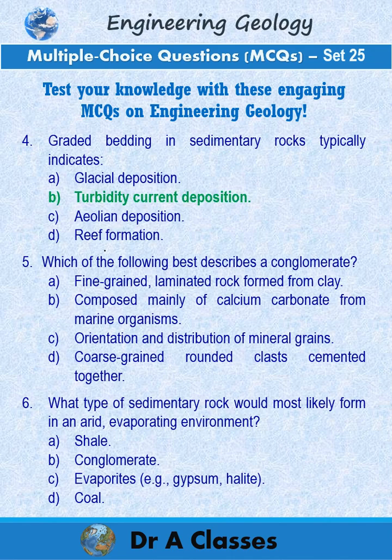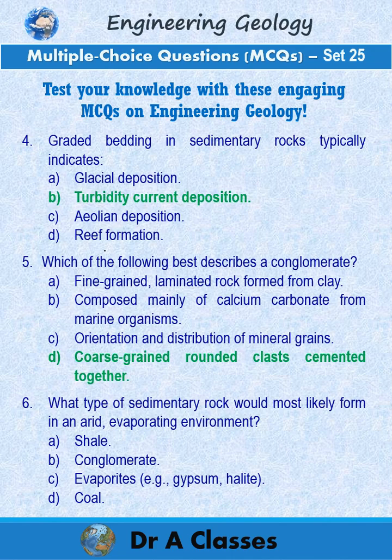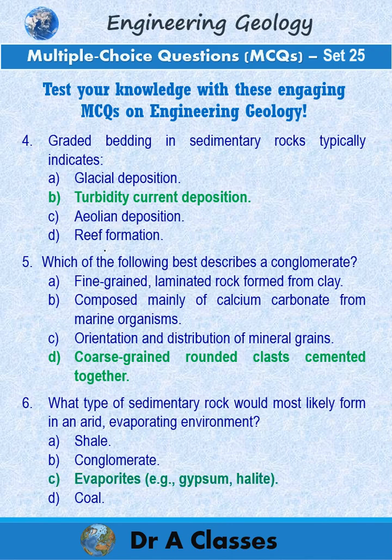Answer to question 4 is B. Turbidity current deposition. Answer to question 5 is D. Coarse-grained rounded clasts cemented together. Answer to question 6 is C. Evaporites, e.g. gypsum, halite.